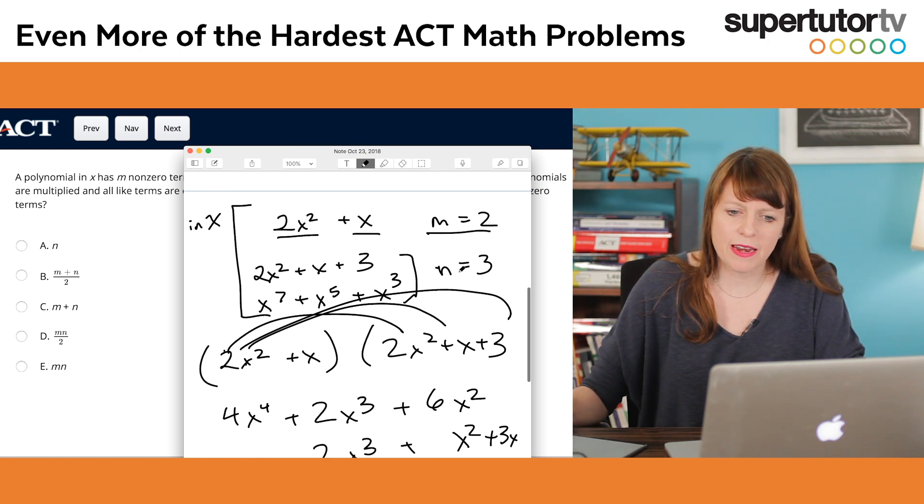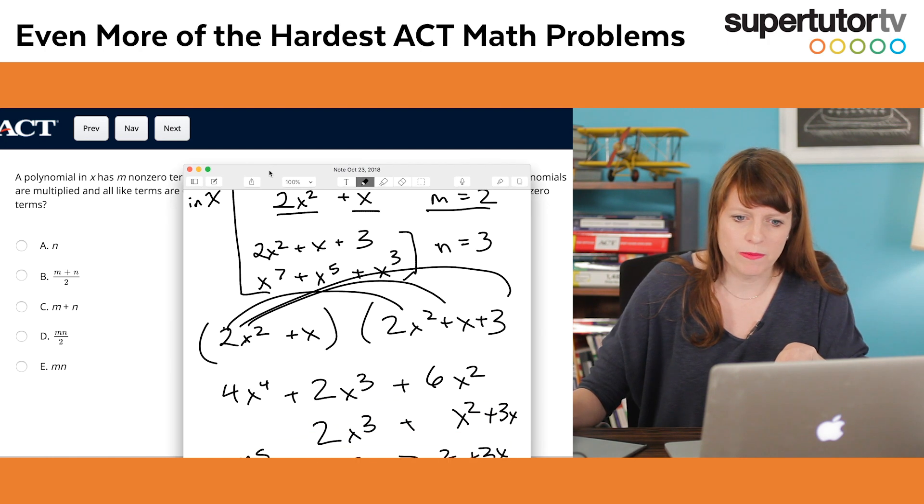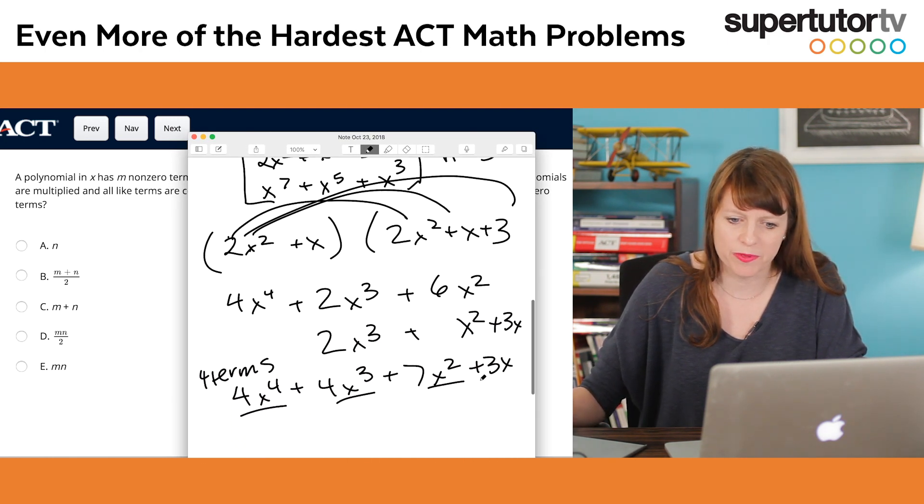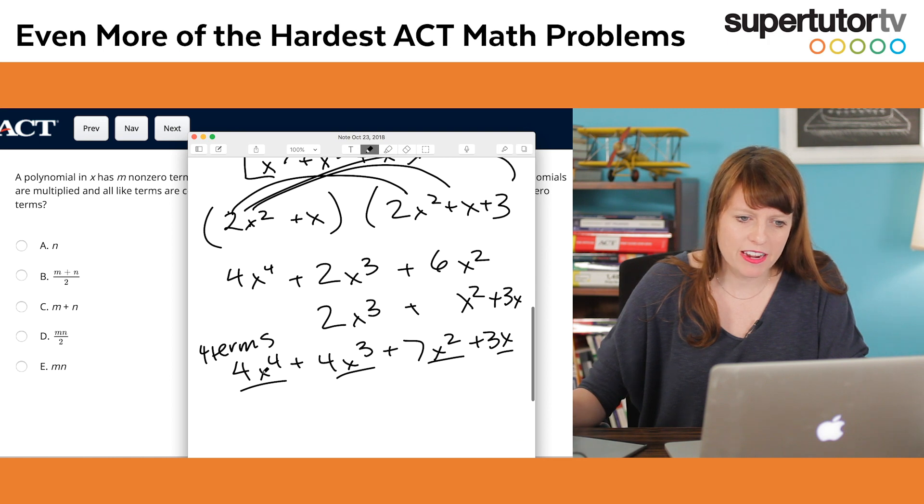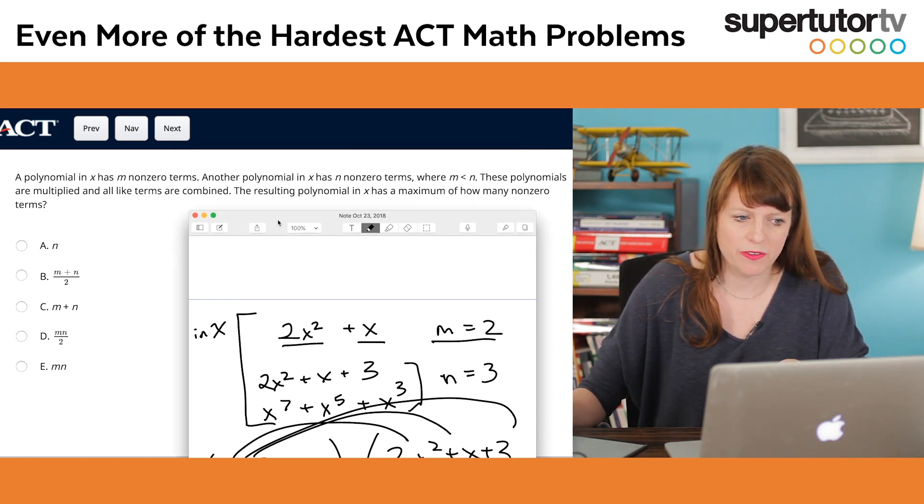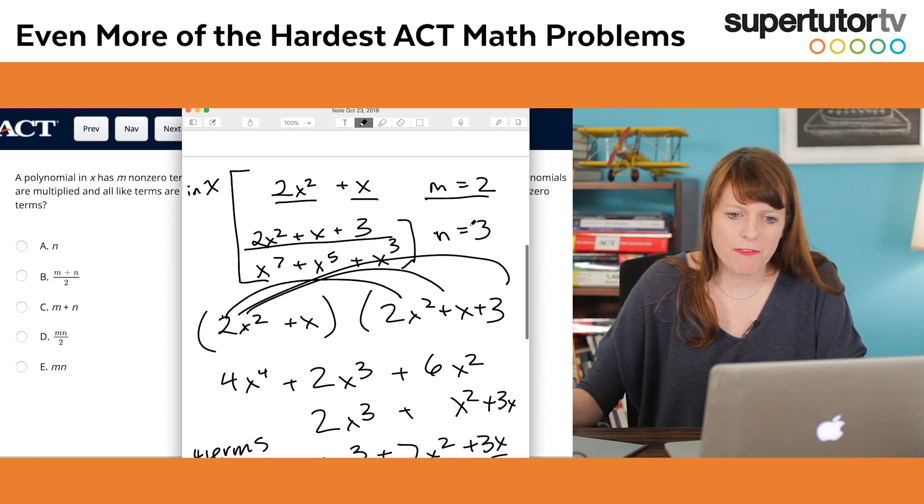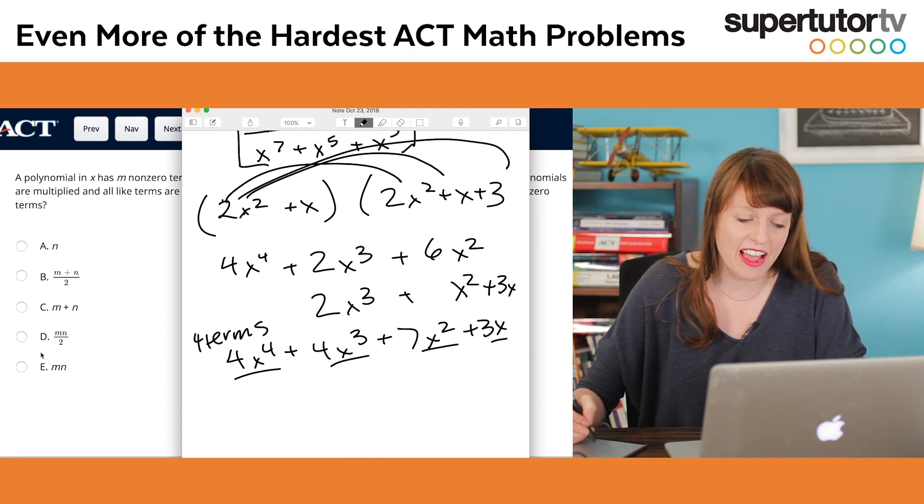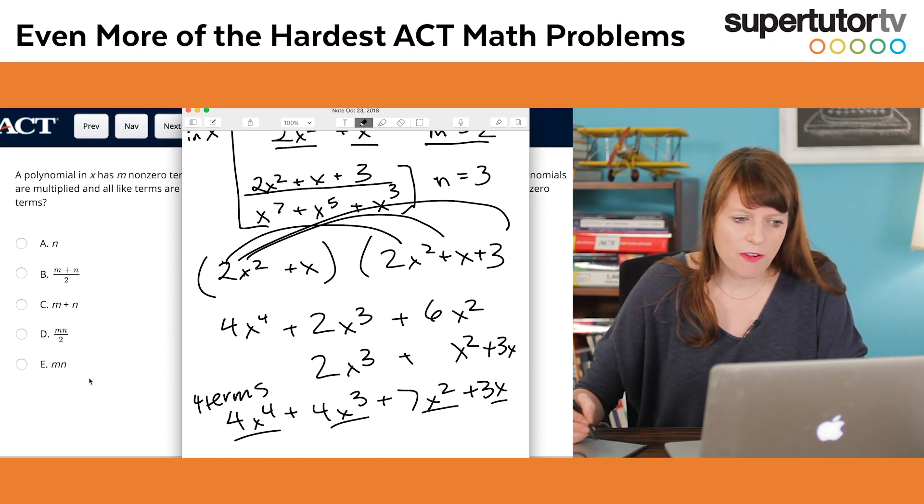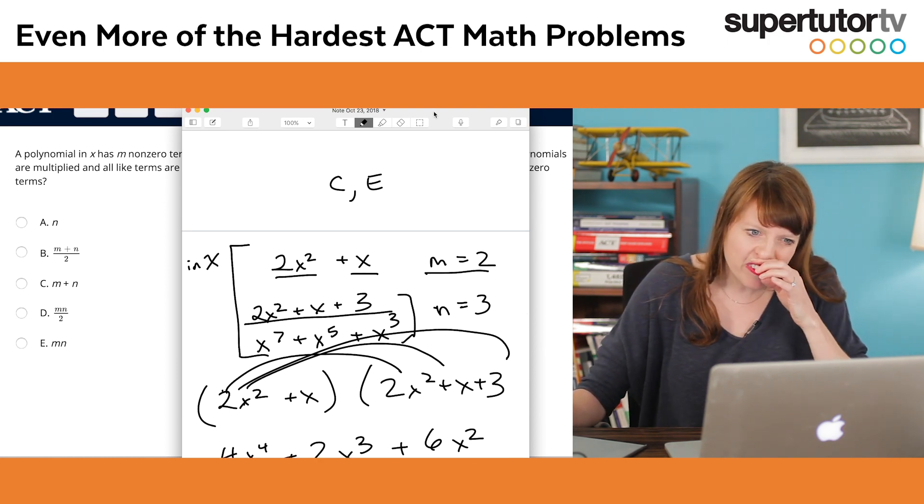And I'm just going to start going through these. The resulting polynomial has a maximum of how many non-zero terms. Well, n equals 3, and I just got 1, 2, 3, 4 non-zero terms. So I know n is out. Now I have m plus n over 2. That would be 5 over 2, which would be 2.5, which this is greater than 2.5. And I want the maximum. We have m plus n, that would be 5. Well, I got 4 here. I'm a maybe on that. I have m times n divided by 2, which would be 6 divided by 2, which is 3. 4 is still more than that. So this is out, and then I have m times n, which would be 6. So this would be 5, and that would be 6. So I'm down to C and E.